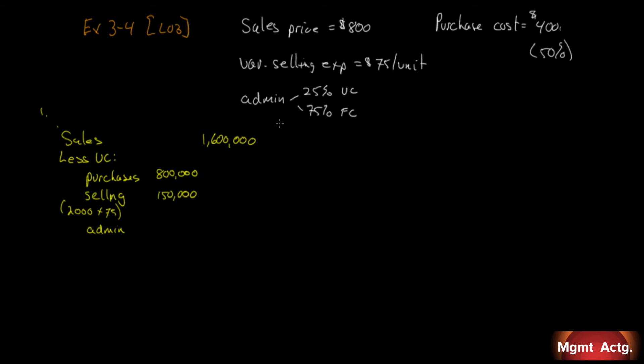Then we have some variable admin expense. It says 25% of our administrative costs are variable. Looking at the income statement, administrative expenses are $200,000. So 25% of that is variable, 75% is fixed. 25% of $200,000 is $50,000. There's our full variable expenses: $1 million.